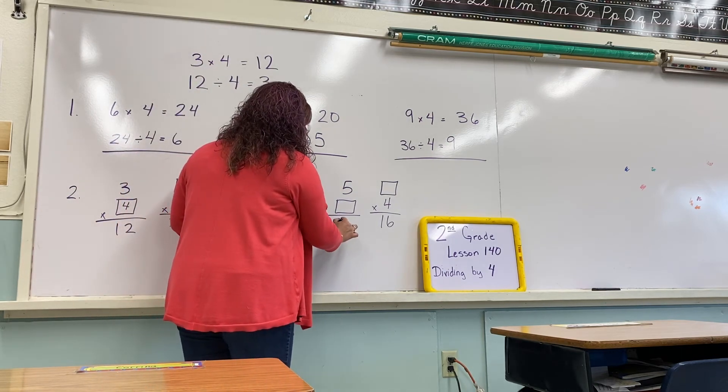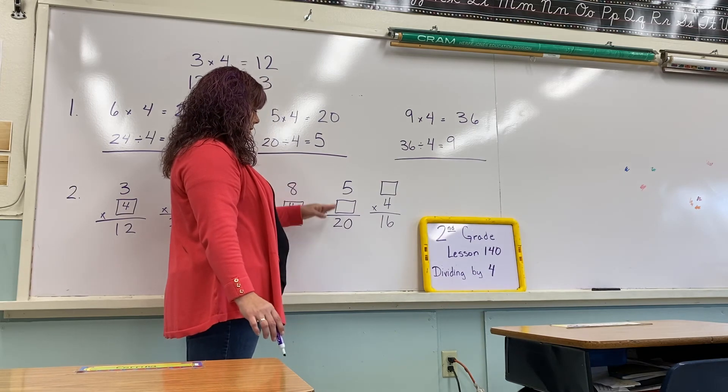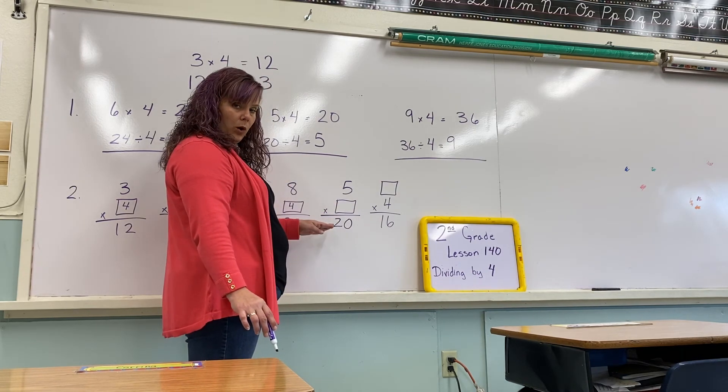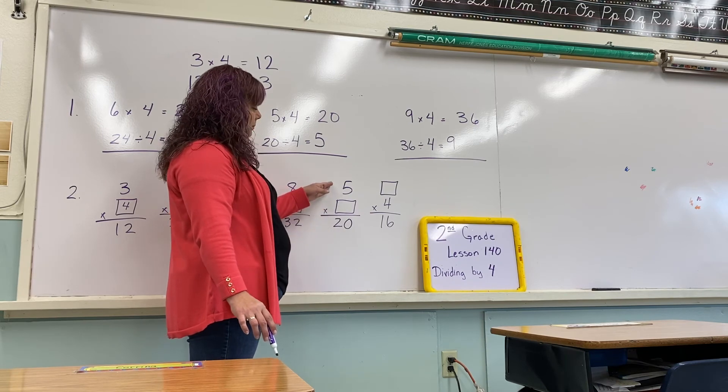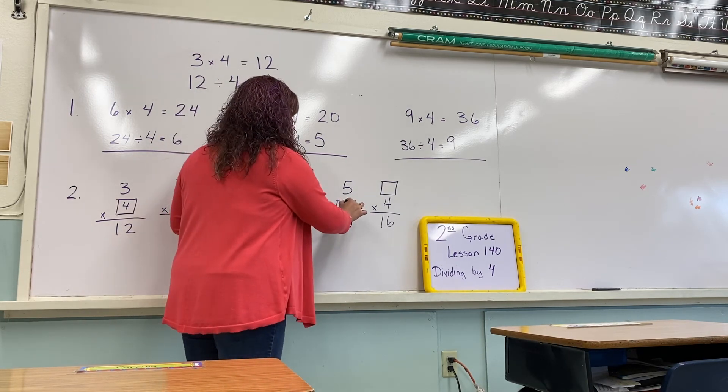Oh, I forgot to give you the answer on this one. Okay, so if we have 5 times what number is equal to 20? Or we could say 20 divided by 5 equals what number? Yes, 4.